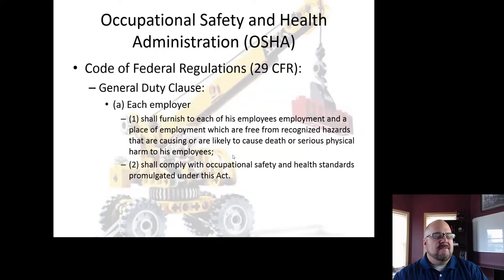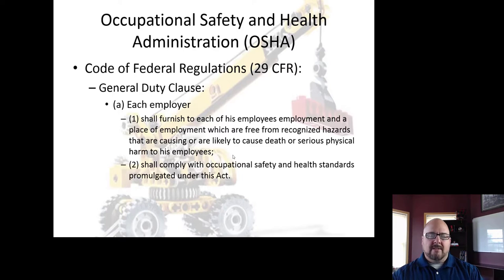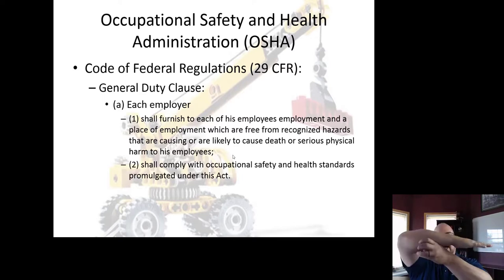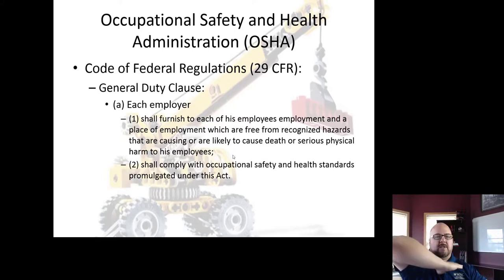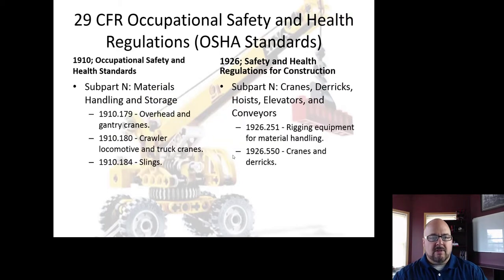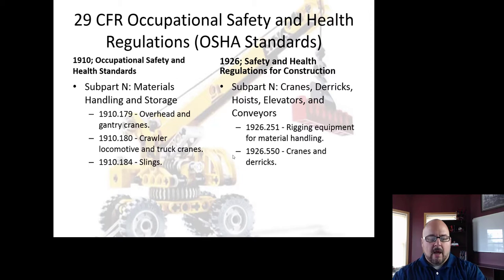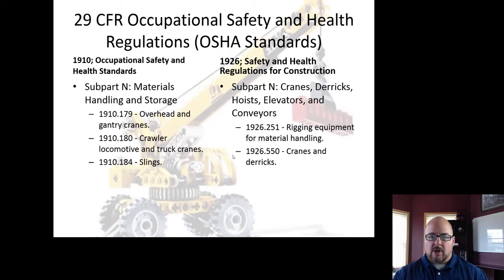General industry tends to use more jib, gantry, and overhead cranes. Construction tends to use more mobile-type cranes and derricks. There are also tower cranes — probably what you're most familiar with — which have a structure that goes straight up, with a cab on top, and the device goes back and forth while spinning on the axis of the tower. You usually see those with the construction of big or tall buildings. We're mostly talking about Subpart N under 1910, but some of the Lecture 14 materials also touch on the construction side.